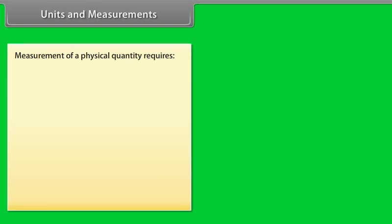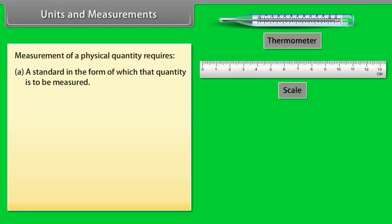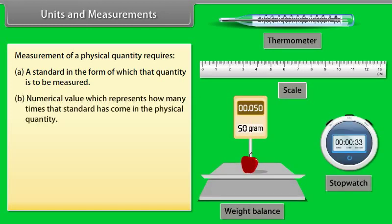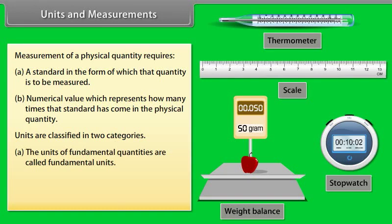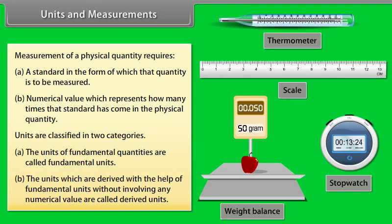Units and measurements. Measurement plays a very vital role in the study of physics. Measurement of a physical quantity requires a standard in the form of which the quantity is to be measured, and a numerical value which represents how many times that standard has come in the physical quantity. Units are classified in two categories: fundamental units and derived units. The units of fundamental quantities are called fundamental units. The units which are derived with the help of fundamental units without involving any numerical value are called derived units.